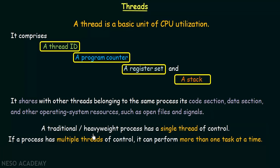A traditional or heavyweight process has a single thread of control. But if a process has multiple threads of control, it can perform more than one task at a time. That means a traditional heavyweight process can have only one thread, which is not very efficient. But if a process has more than one thread, each thread will be assigned a different task and hence that process can perform more than one task at a time.